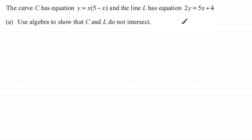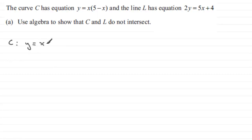I'm going to do much the same kind of thing — I'm going to try and see if they do intersect, and what I'll most probably find is some equation that we cannot solve. So I'm going to put down our equations first of all. We've got equation C: y equals x multiplied by 5 minus x, and equation L: 2y equals 5x plus 4. We'll number these two equations 1 and 2.